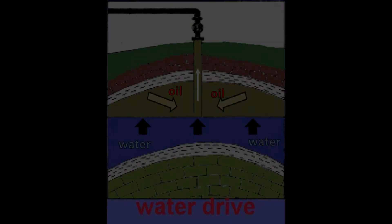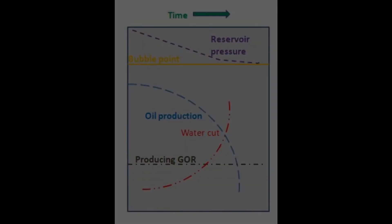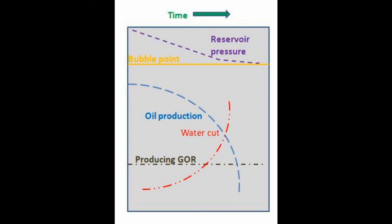The rate of water flowing into the reservoir varies greatly in different reservoirs. Again, let's go back to our chart and examine how water drives can be displayed. This time, we'll look at oil production, reservoir pressure with the bubble point pressure, and the producing GOR with water cut.